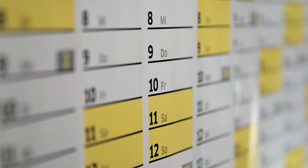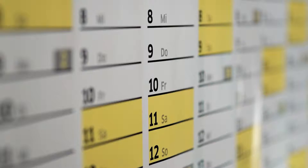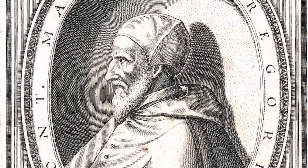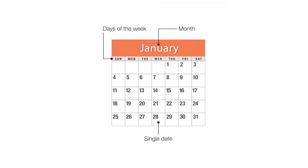A date is the designation of a single specific day within such a system. Today, the most common form of calendar is the Gregorian calendar. Typically, it's displayed in separate monthly grids of seven columns for each day of the week and five to six rows. However, the format of any calendar is not set in stone, so the design can vary so long as they visually show the chronological sequence of dates or time units.